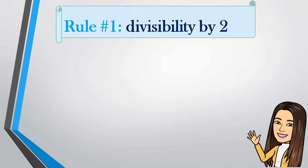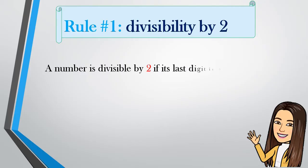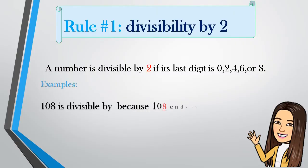Rule number 1: Divisibility by 2. A number is divisible by 2 if its last digit is an even number: 0, 2, 4, 6, or 8. Example: 108 is divisible by 2 because 108 ends in 8.